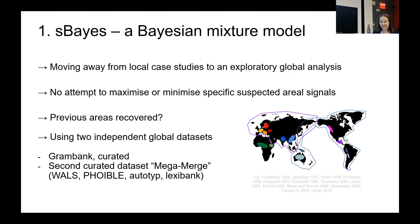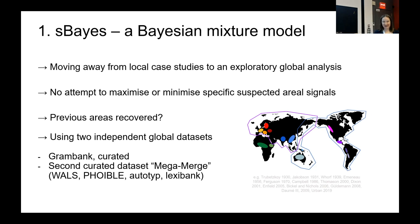We want to move away from local case studies to see what emerges from a run using data from as many languages and families as possible, without specifically selecting features that might maximise or minimise specific suspected areal signals for certain regions of the world, and evaluate whether what comes out matches ideas or postulations of areas from the literature. We are using two independent global datasets: one being GramBank, and the second being a curated dataset where we lump variables in a motivated way from WALS, AUTOTYP, and Lexibank — so we also include features on phonology and colexifications with the second database.